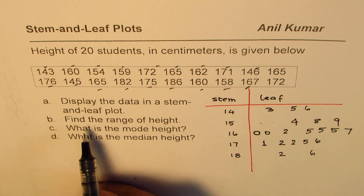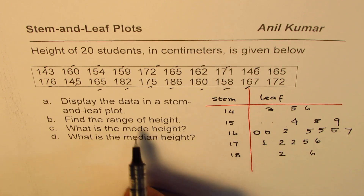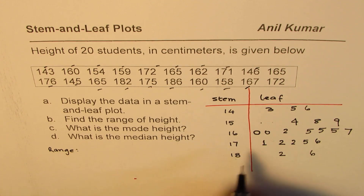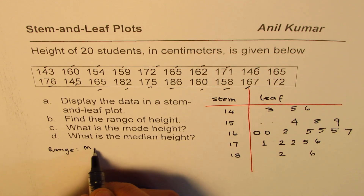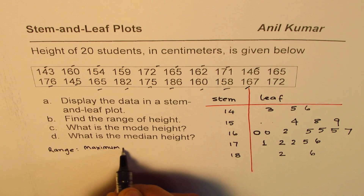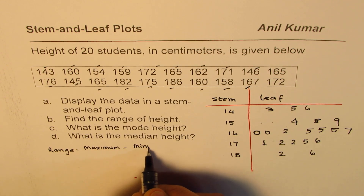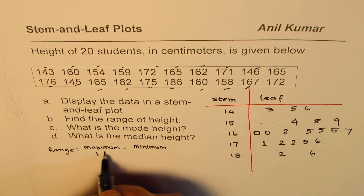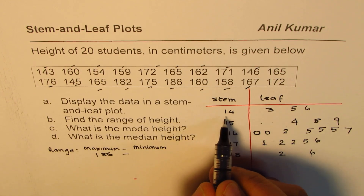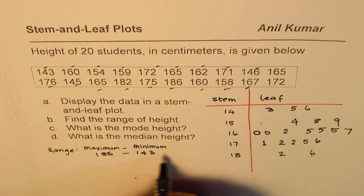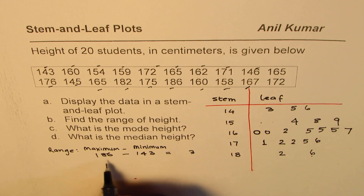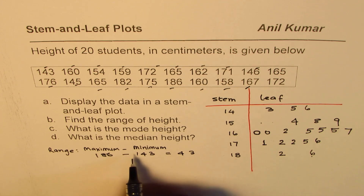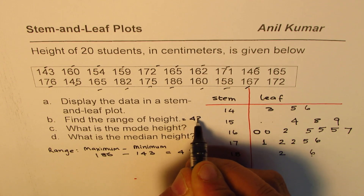Range is the spread of data — it is maximum take away minimum. In our case, the maximum is 186 and the minimum is 143. So 186 minus 143: 6 minus 3 is 3, 8 minus 4 is 4, giving us 43 as the range. So the range is equal to 43.